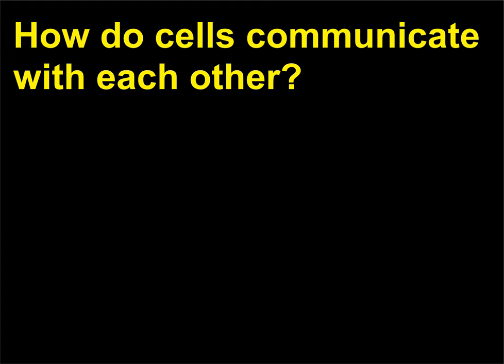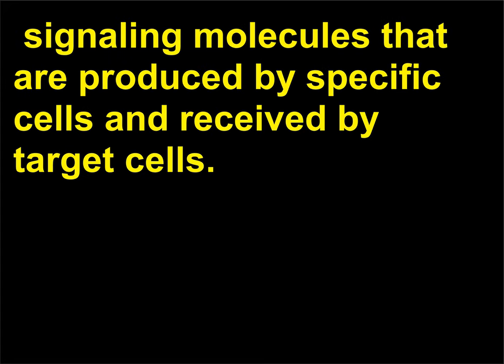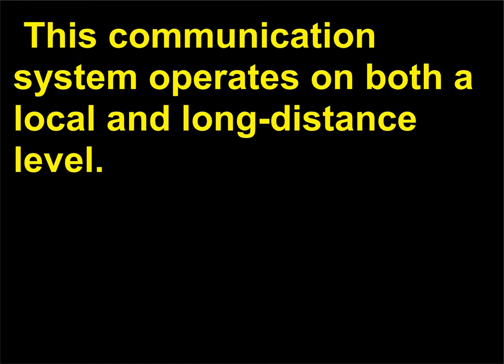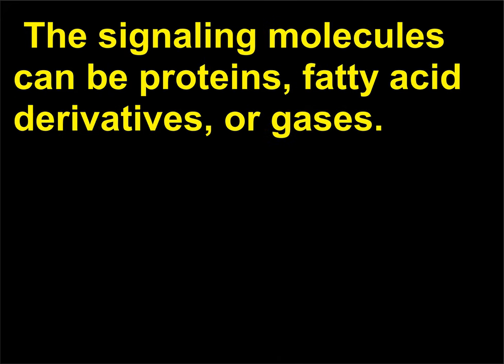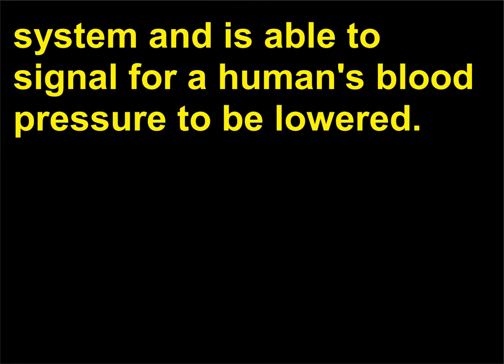How do cells communicate with each other? Cells communicate with each other via small signaling molecules that are produced by specific cells and received by target cells. This communications system operates on both a local and long-distance level. The signaling molecules can be proteins, fatty acid derivatives, or gases. Nitric oxide is an example of a gas that is part of a locally based signaling system and is able to signal for a human's blood pressure to be lowered.